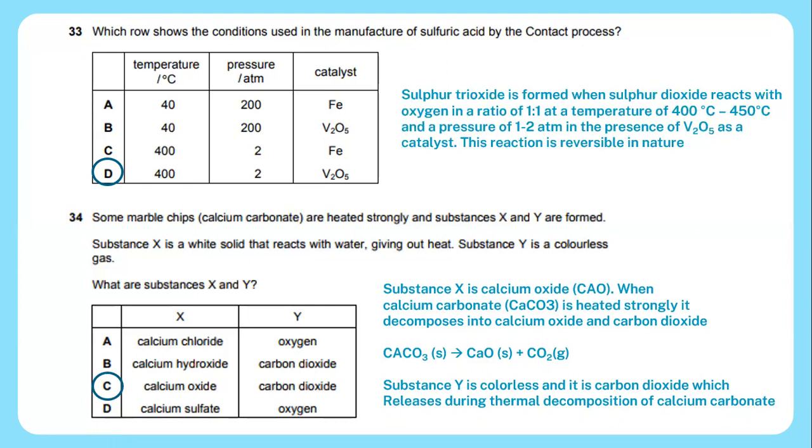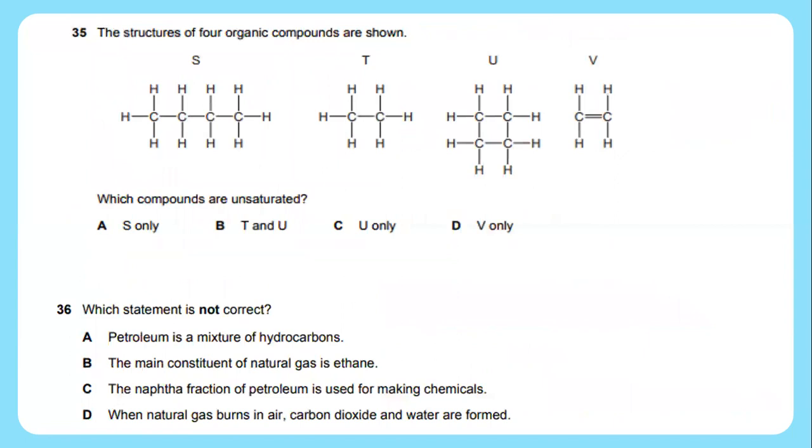Question 35: The structure of four organic compounds are shown. Which compounds are unsaturated? In this case, V actually reflects ethylene. Ethylene is an unsaturated organic compound with a chemical formula of C2H4. The answer will be D.